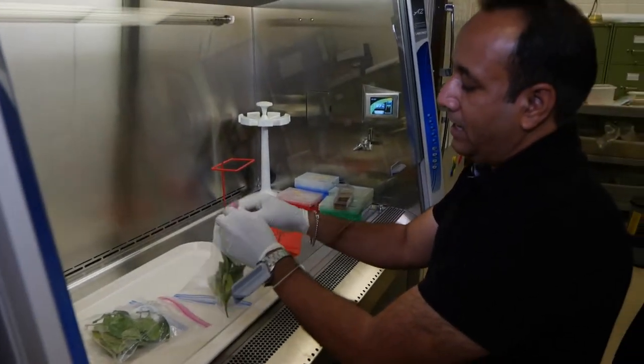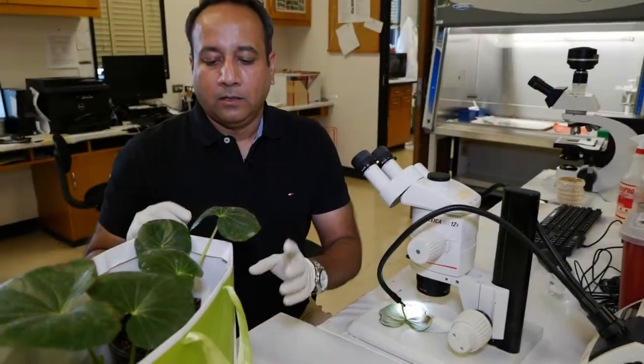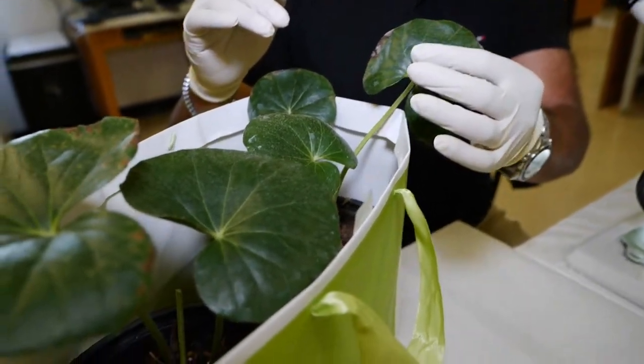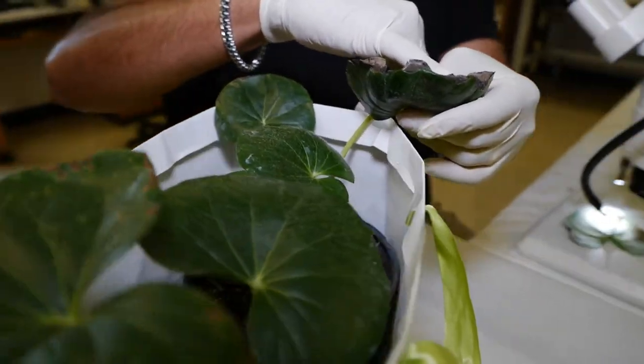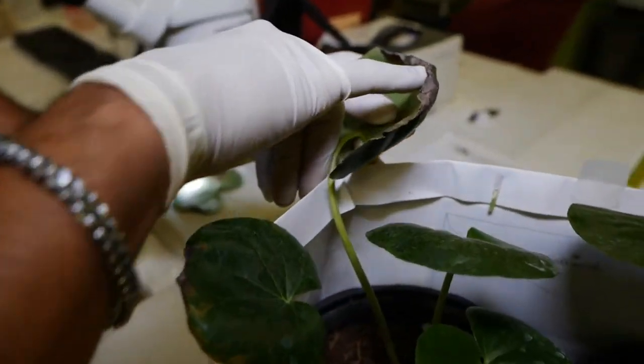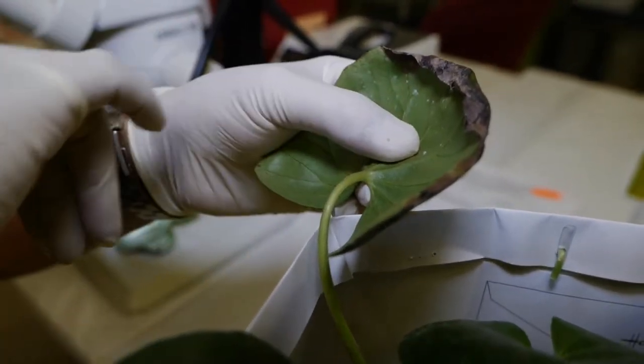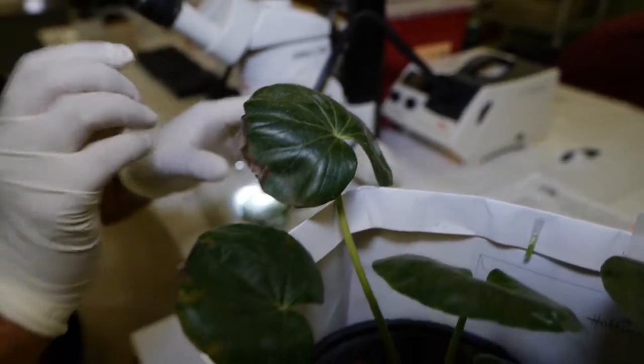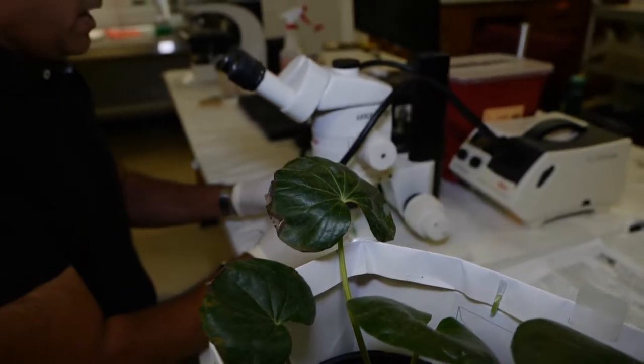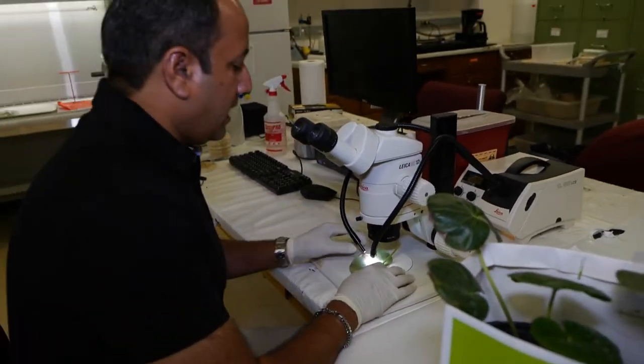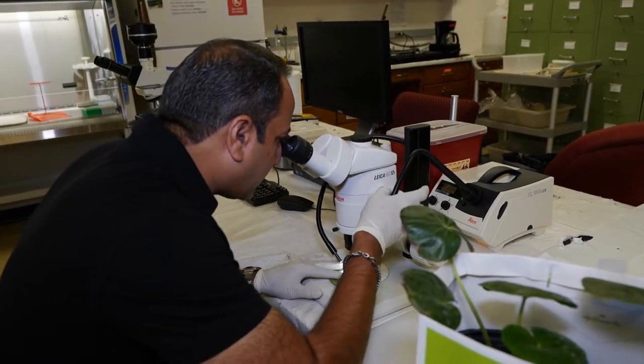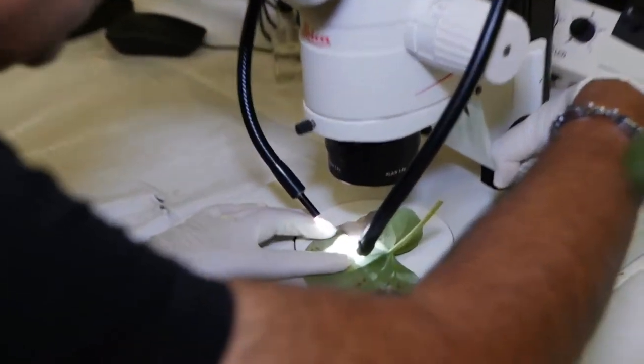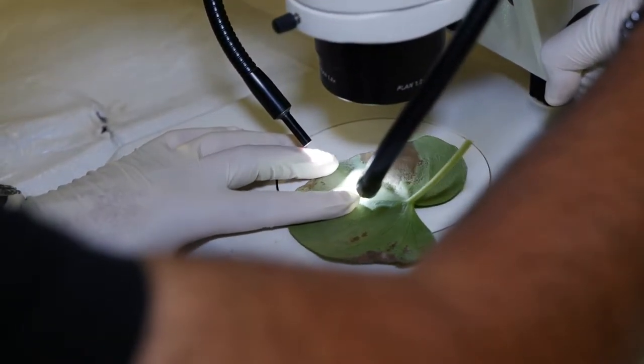In this case, this sample came from a nursery owner in Rapides parish, and they are worried about these necrotic lesions on the margins of this plant. In these kinds of samples, the first thing we do is take the leaves under a dissecting microscope and see if we can find any fungal structures or any signs of fungal disease.